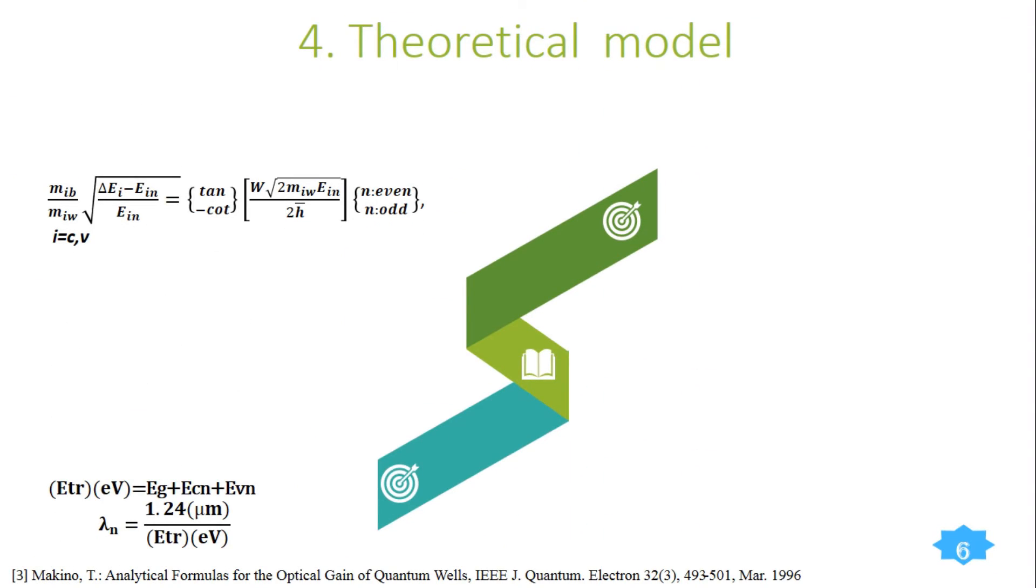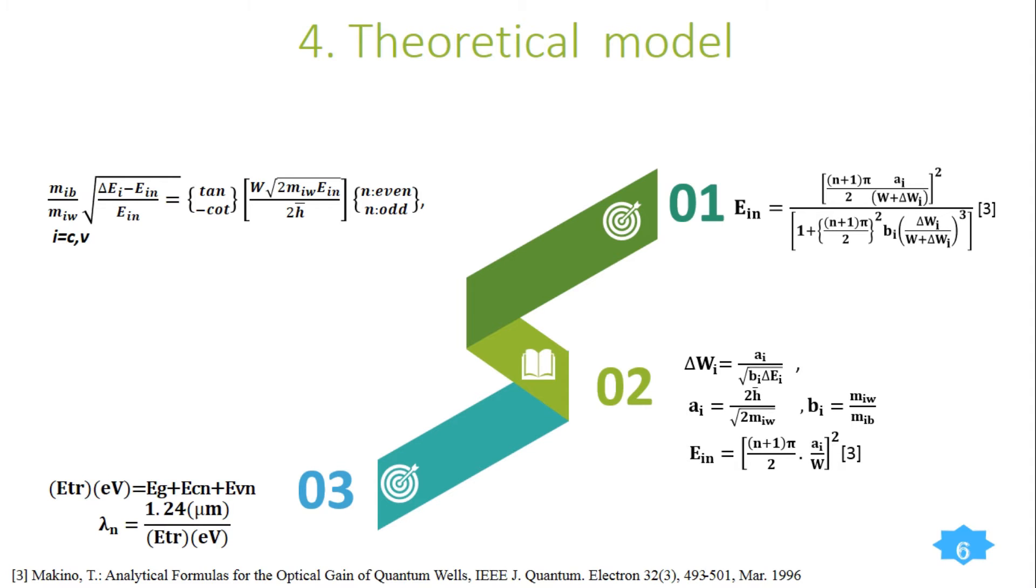Ben Daniel-Duke model is the solution of the parabolic band model. We use it to calculate E, the quantized energy level in the valence and the conduction. E represents C for conduction and V for valence. This is the first approximation taken from the parabolic band exact solution, the first exact solution when delta E becomes infinite. We use these two formulas to calculate this result.